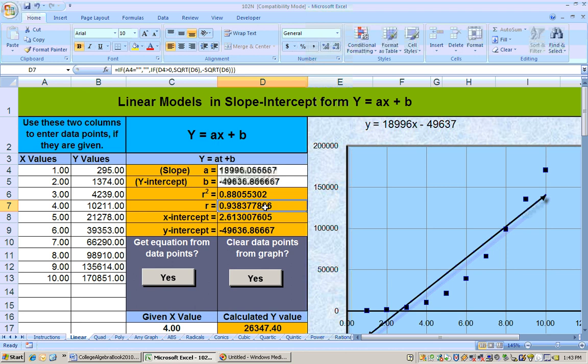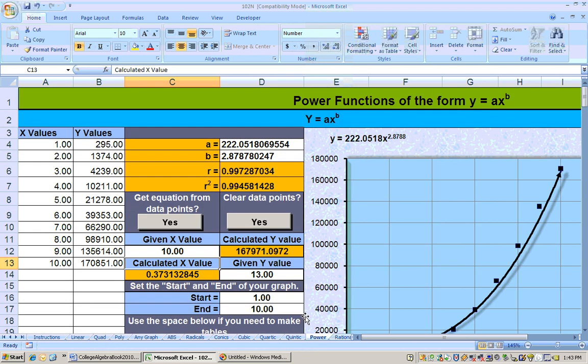Still good, but not nearly as good as that power function. You can see that the line doesn't fit the data points as well. So for this particular model, the power function does better than the linear model.